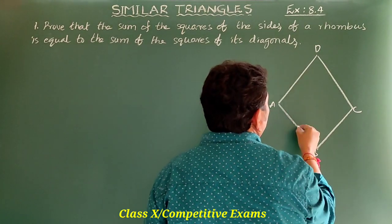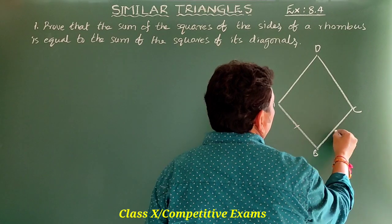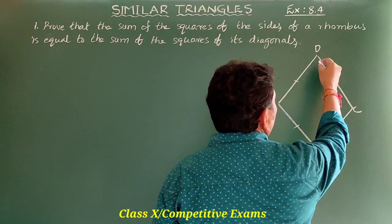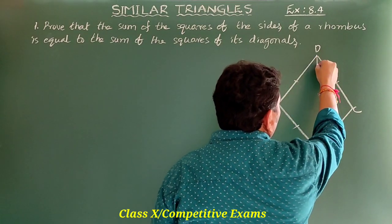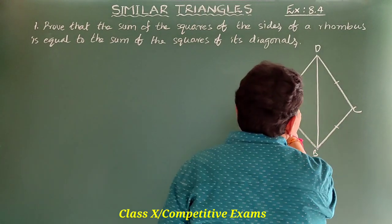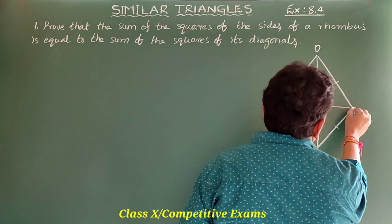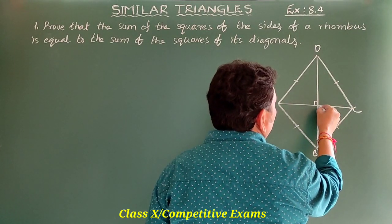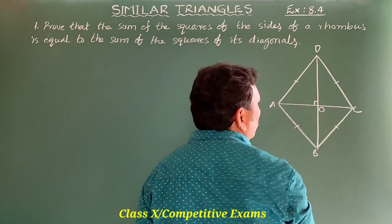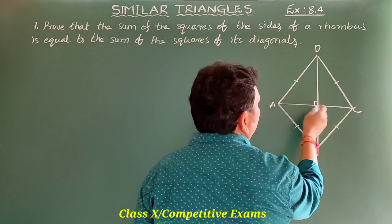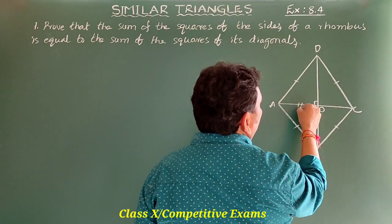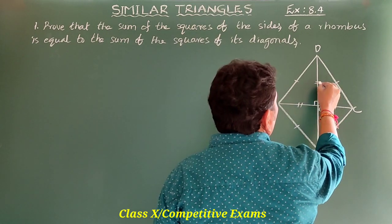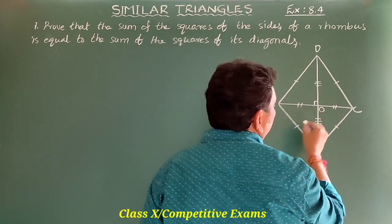So, ABCD is a rhombus, meaning AB = BC = CD = DA. The diagonals bisect each other at right angles. Let the bisecting point be O, then AO = OC and OD = OB.